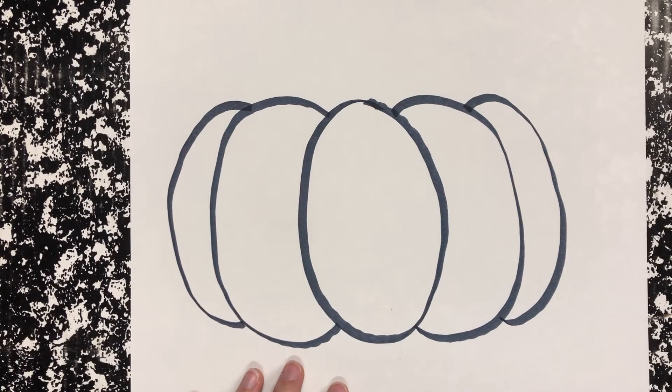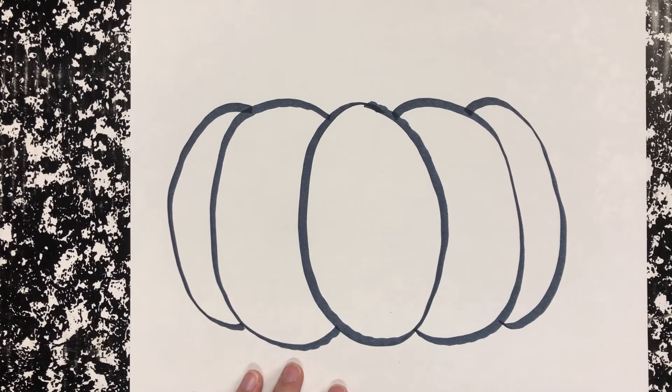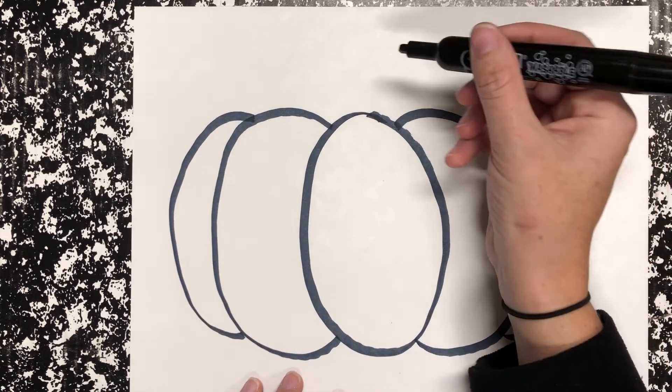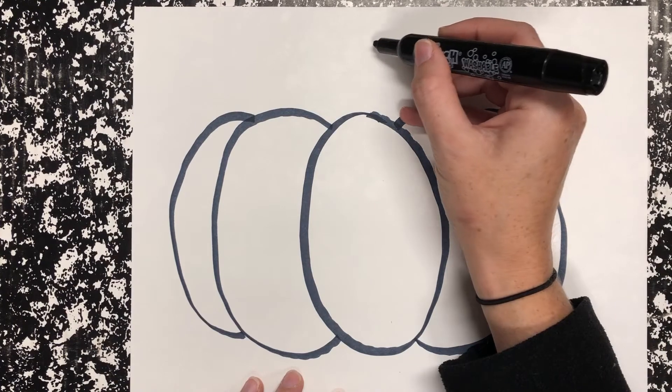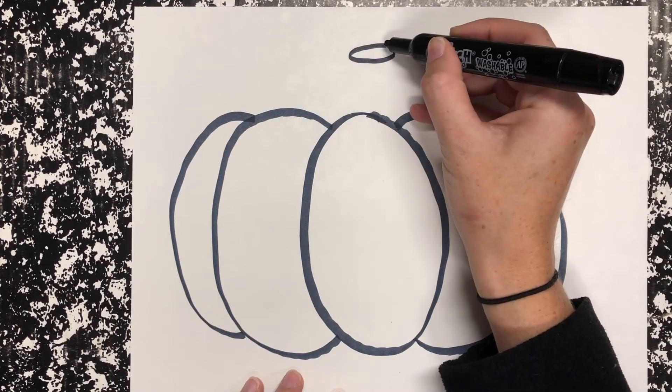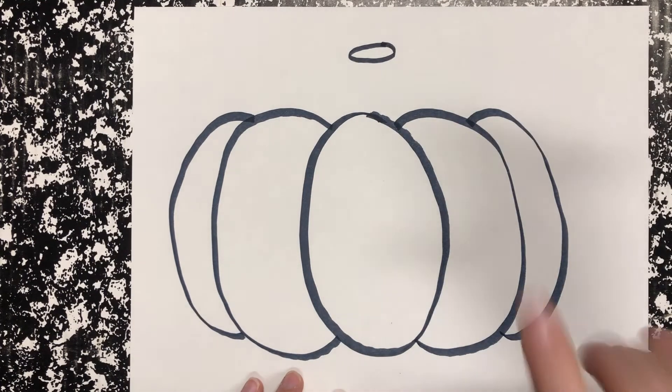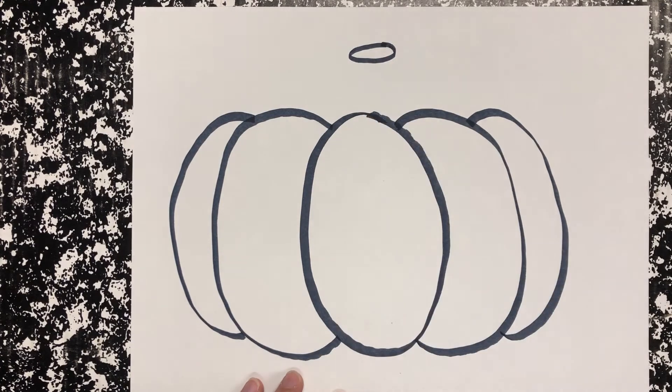Okay, what's our pumpkin missing? We need a stem. We're going to make the very top of the stem first, the part where it's cut off from the vine. I like to do that by making a floating oval so there's some space to draw the rest of the stem.